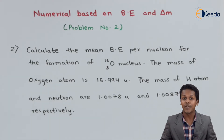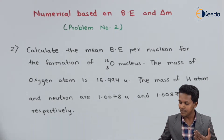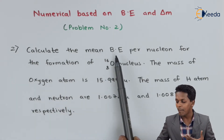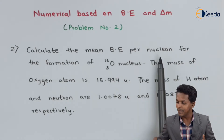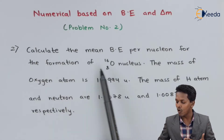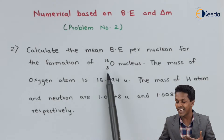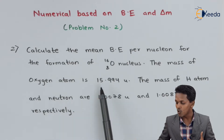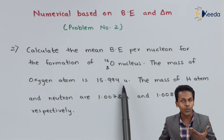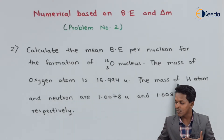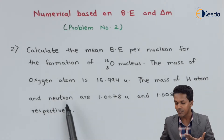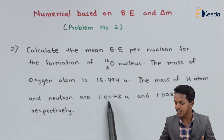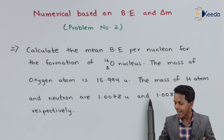So friends, this is the question that has been given to us — we have to calculate the mean binding energy per nucleon for the formation of the oxygen nucleus having an atomic number of 8 and atomic mass number of 16. The mass of the oxygen atom is 15.994 unified mass units. The mass of the hydrogen atom and the mass of the neutron are found to be 1.0078 u and 1.0087 u respectively.